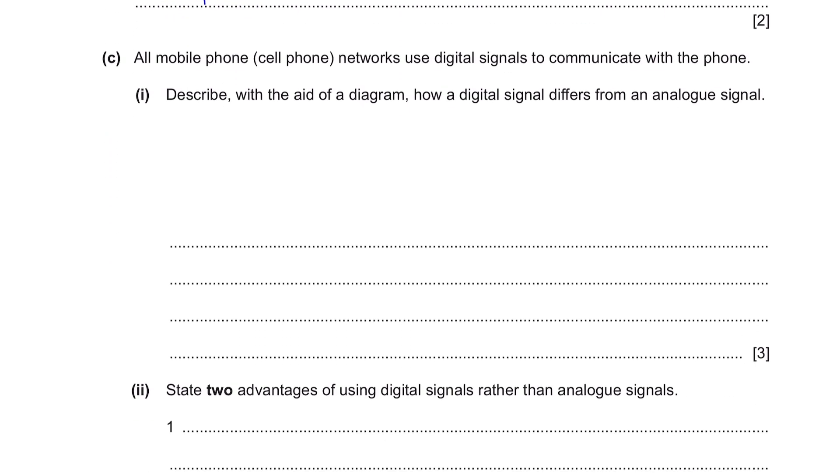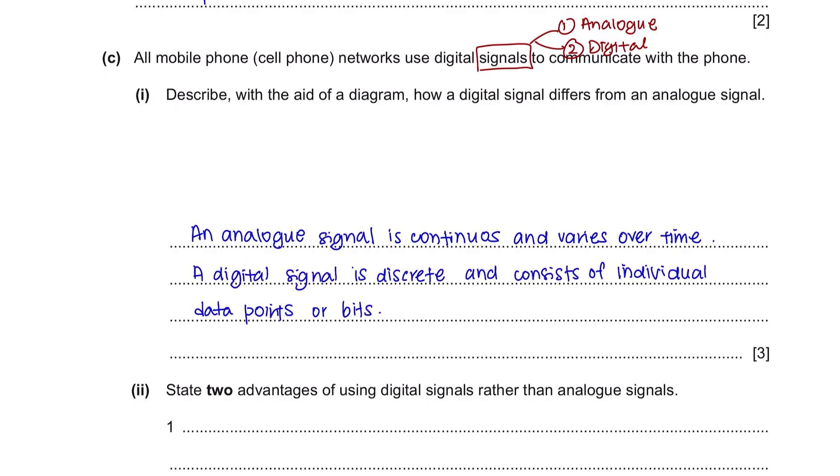Question C. All mobile phone networks use digital signals to communicate with the phone. You should know there are two types of signals: analog and digital. An analog system is continuous and varies smoothly over time. For example, it's the sound wave produced by a person's voice when they are talking. Whereas a digital signal is discrete and consists of individual data points or bits. For example, binary data used in computers, represented as sequences of zeros and ones. The question suggests that with the aid of diagram, you can explain how they differ. So here's what the representation looks like.